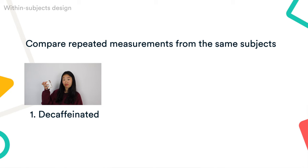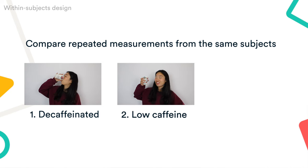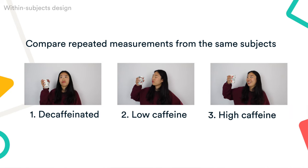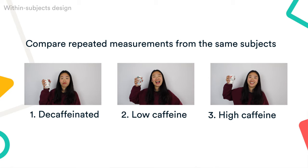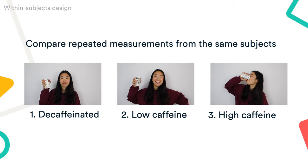A within-groups or within-subjects design means that each subject experiences all conditions — a single group of subjects tested on short-term memory three times: after a decaffeinated drink, a low caffeine drink, and a high caffeine drink. You compare these repeated measurements from the same subjects. Within-groups designs are often cheaper and faster, but between-groups designs have stronger internal validity.